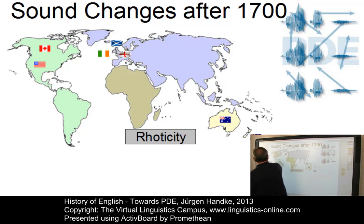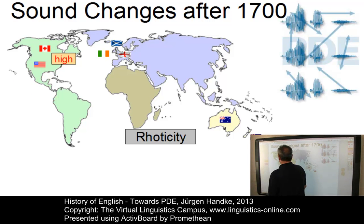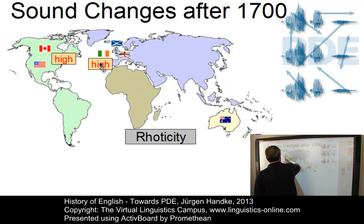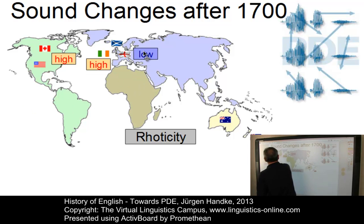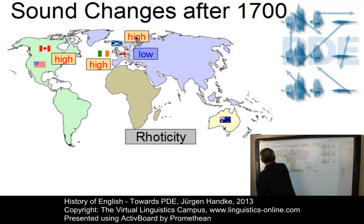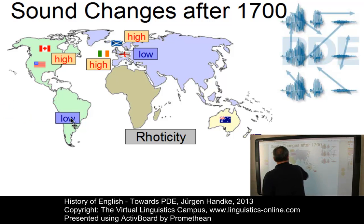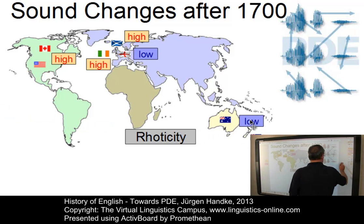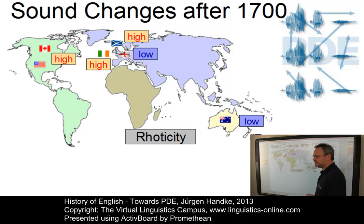Now, as you know, in the North American variety, roticity is now pretty high. In Irish English, it is high, whereas in England, in RP, it is extremely low. Scottish has a medium degree of roticity. And the varieties in Australia and New Zealand are pretty low.